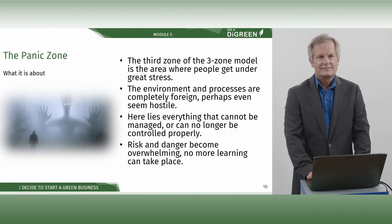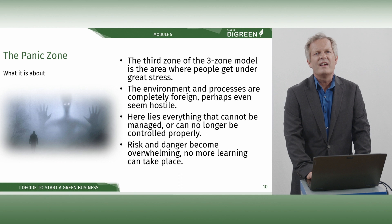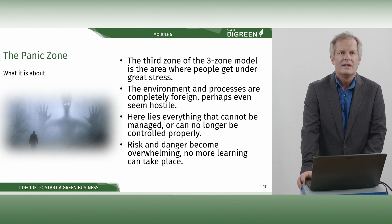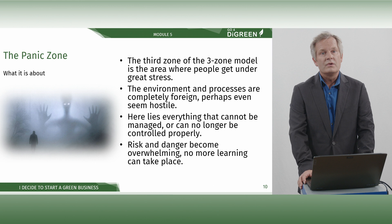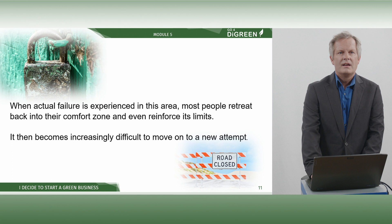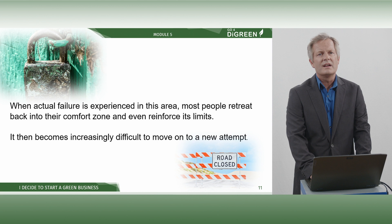The panic zone. The third zone of the three-zone model is the area where people get under great stress. The environment and processes are completely foreign, perhaps even seem hostile. Here lies everything that cannot be managed or controlled properly. Risk and danger become overwhelming, and no more learning can take place. When actual failure is experienced in this area, most people retreat back into their comfort zone and even reinforce its limits. It then becomes increasingly difficult to move on to a new attempt.